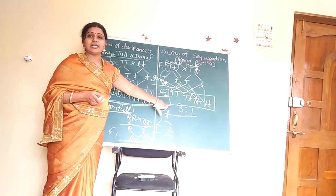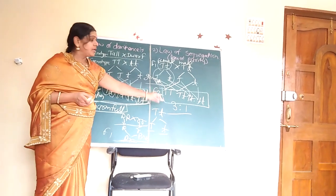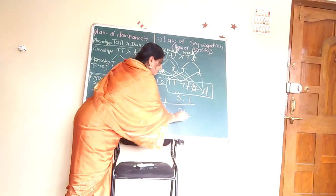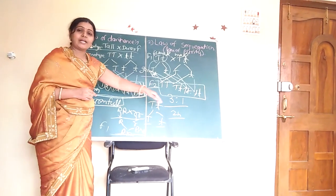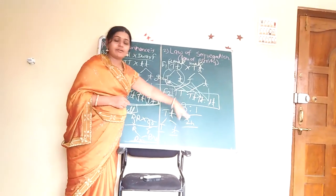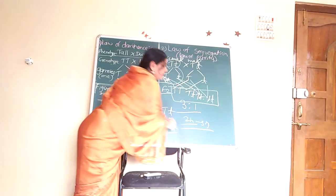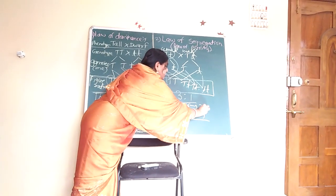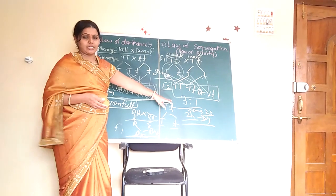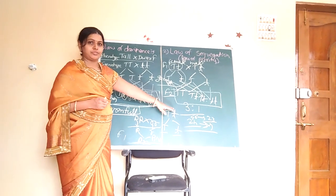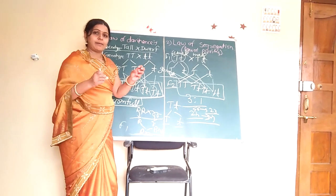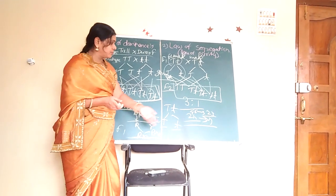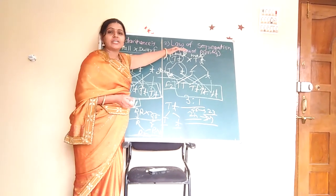This law is universally applicable. Why? Because every sexual organism is a diploid organism with 2N chromosomes — for example, 46 chromosomes in humans. When gametes are formed, the diploid is converted into haploid — 46 chromosomes become 23. When the male haploid gamete and the female haploid gamete fuse, the diploid organism is produced. That is why the law of segregation is universally applicable.